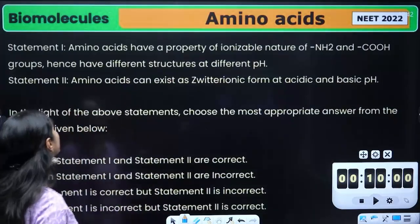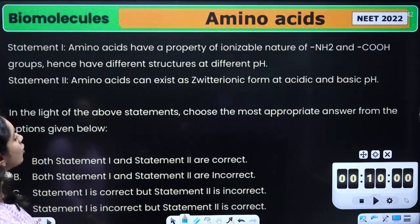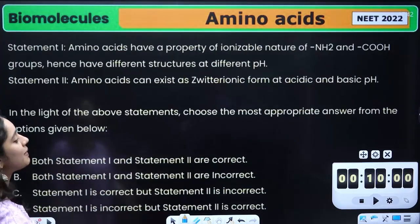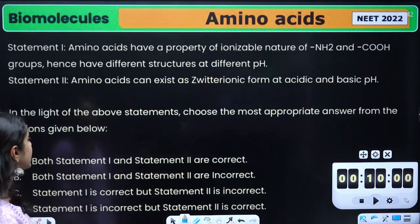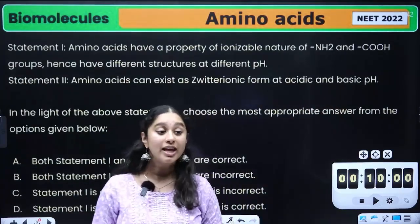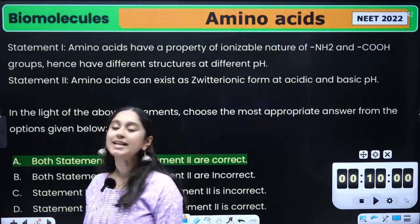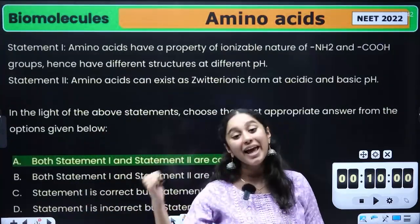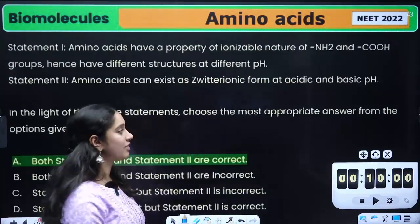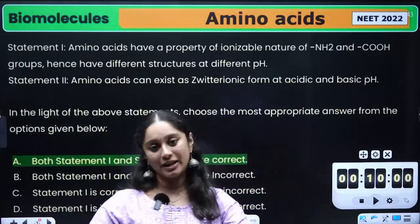So, Amino Acids, statement 1 and 2 — I had a question from NEET 2022. Amino acids have an ionizable nature and they have different structures at different pHs, and they exist in zwitterionic form at acidic and basic pH. The correct answer is Option A — 3 stars, fantastic job. You can comment your correct answer below.